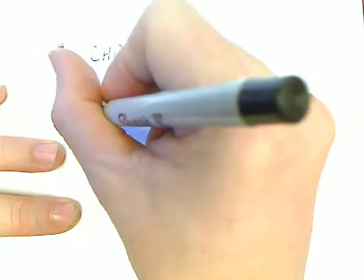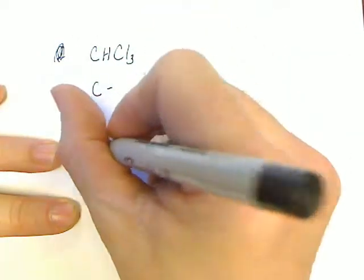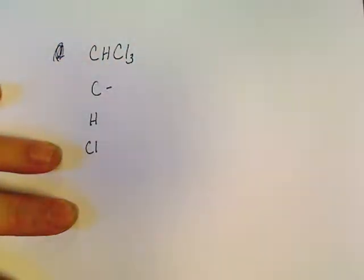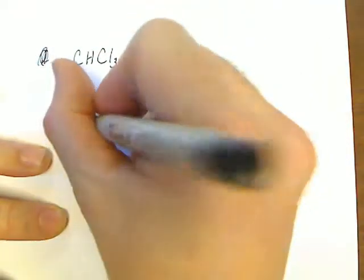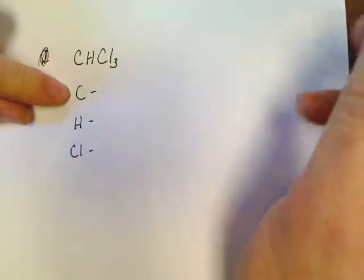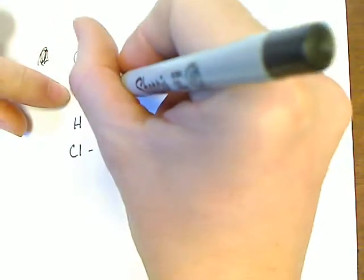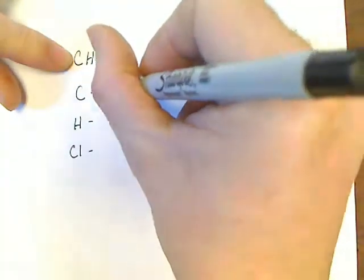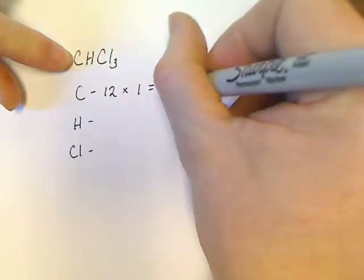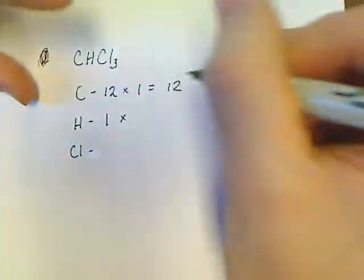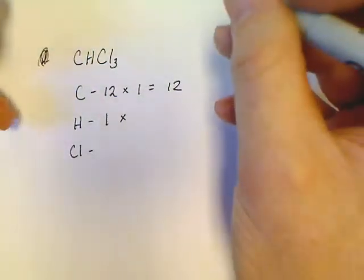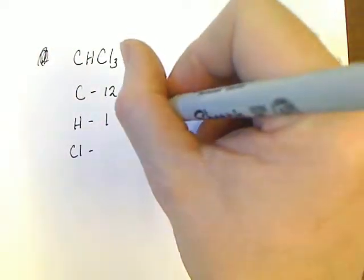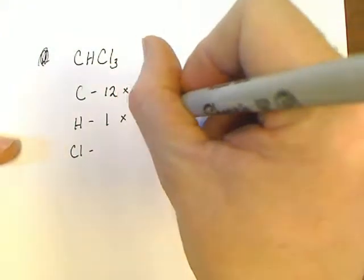Now at this point I'm going to go to my periodic table and look up the mass of carbon. Carbon weighs 12, and there's only one carbon in this compound, so I'm going to go 12 times 1 is 12. Hydrogen weighs 1, and there's one hydrogen in this compound, so 1 times 1 is 1. So far this is fabulous.